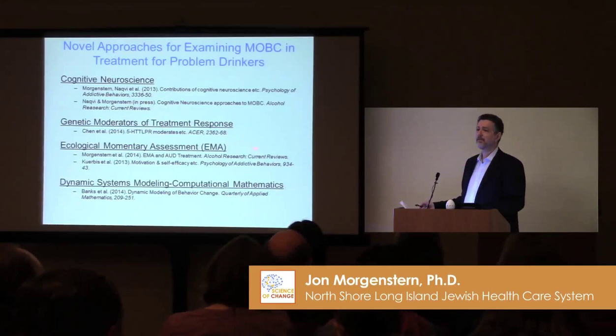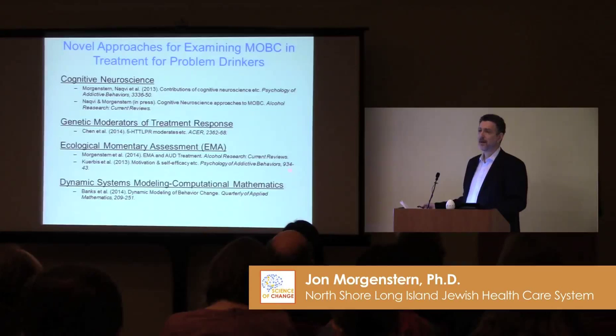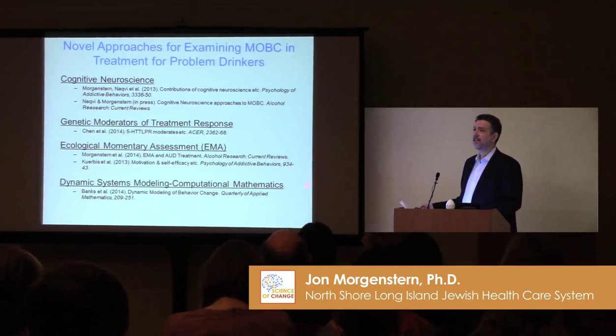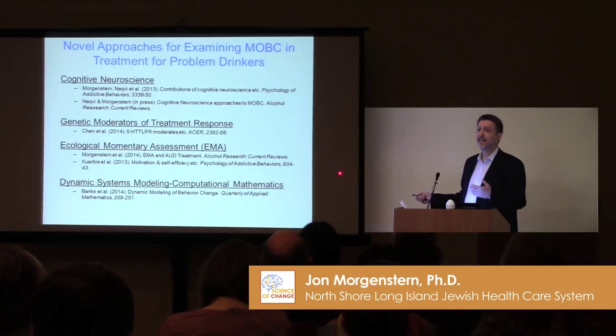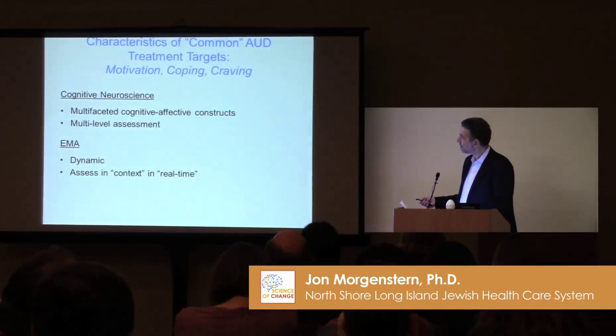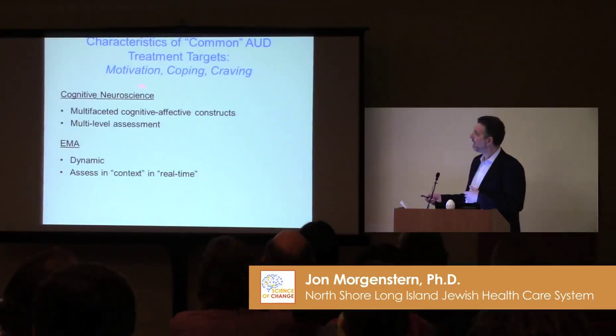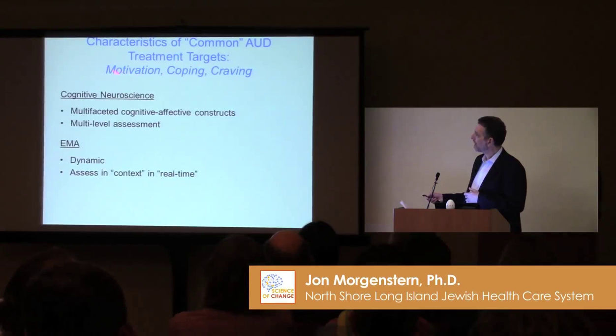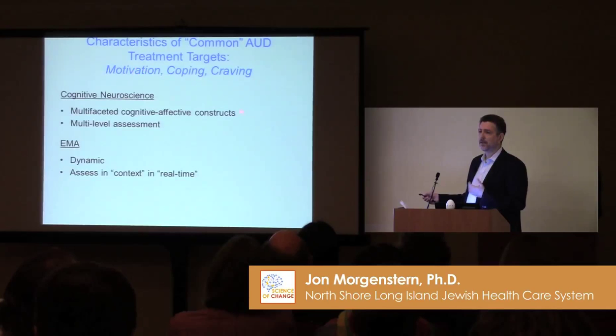We wouldn't have done this without the BAA — it encouraged us to think out of the box. But the question really is: does any of this make a difference? Here's the promise: it all should be helpful, but does it? I want to talk about some findings that I actually think are quite promising, even surprising to me. I want to take common treatment targets — I'll call them mechanisms: motivation, coping, craving. If we think about two aspects — cognitive neuroscience and EMA — cognitive neuroscience would say if you want to measure these constructs, you have to think about them as multifaceted cognitive affective constructs. They're not just one process.